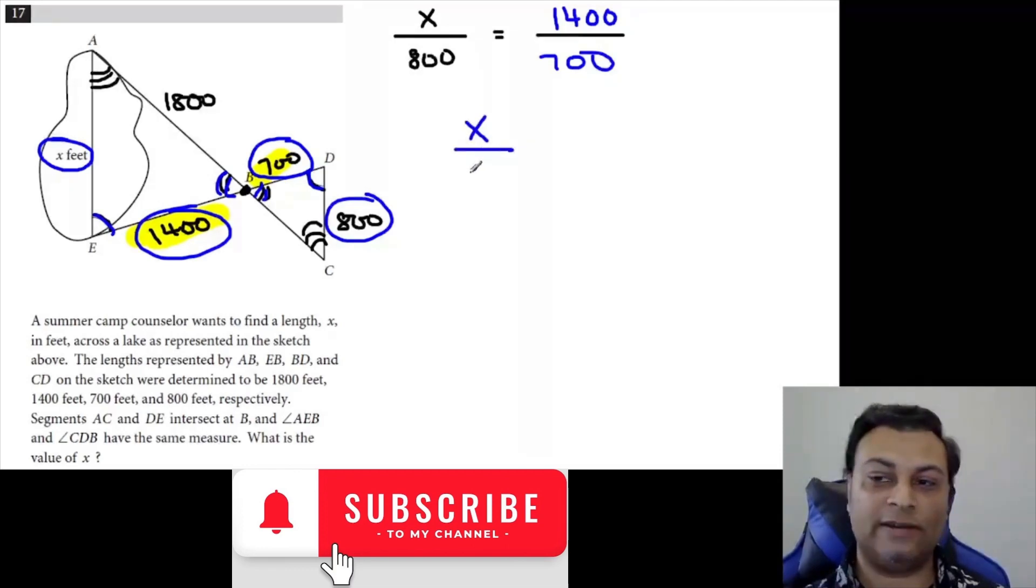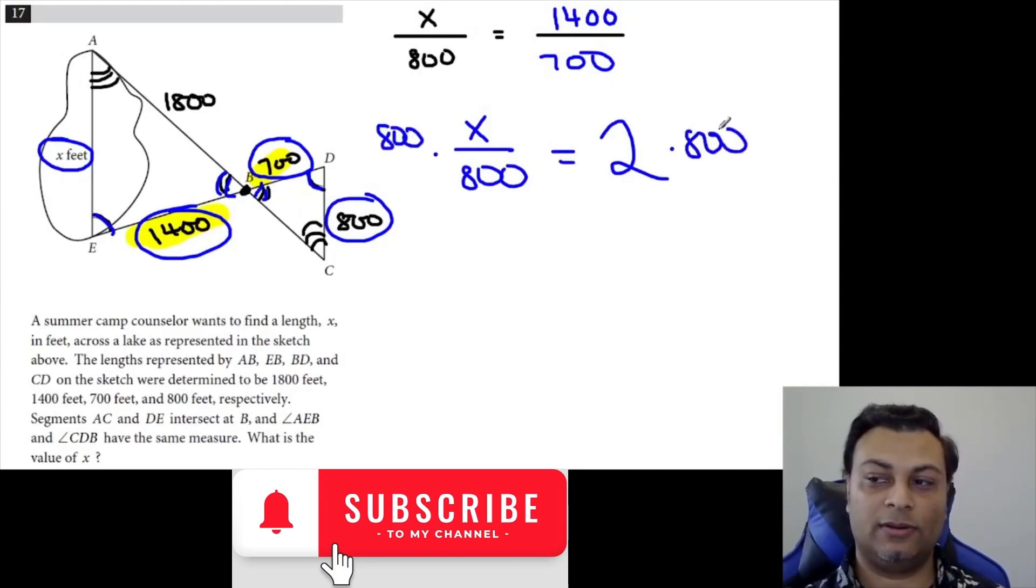And this is 2. 1400 divided by 700 - it's a non-calculator section, but we have to know that that comes out to 2. And then you multiply by 800 and you're done. X is 1600. It's 1600 feet, but X is already in feet, so the answer that you would have to key in would be 1600.